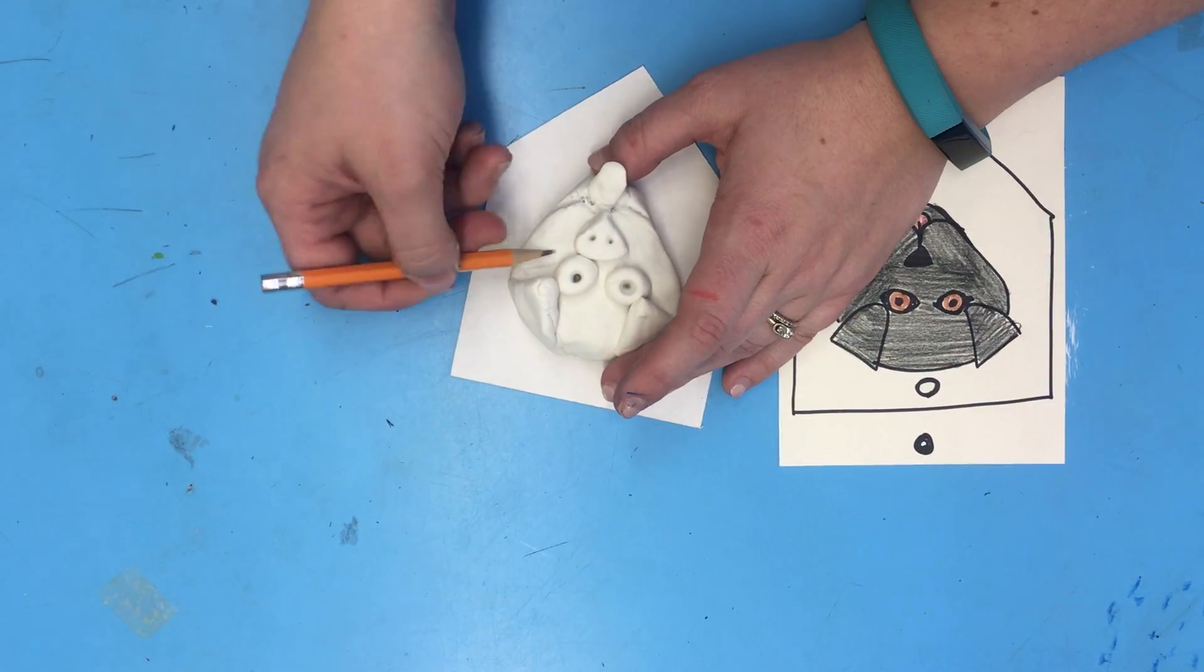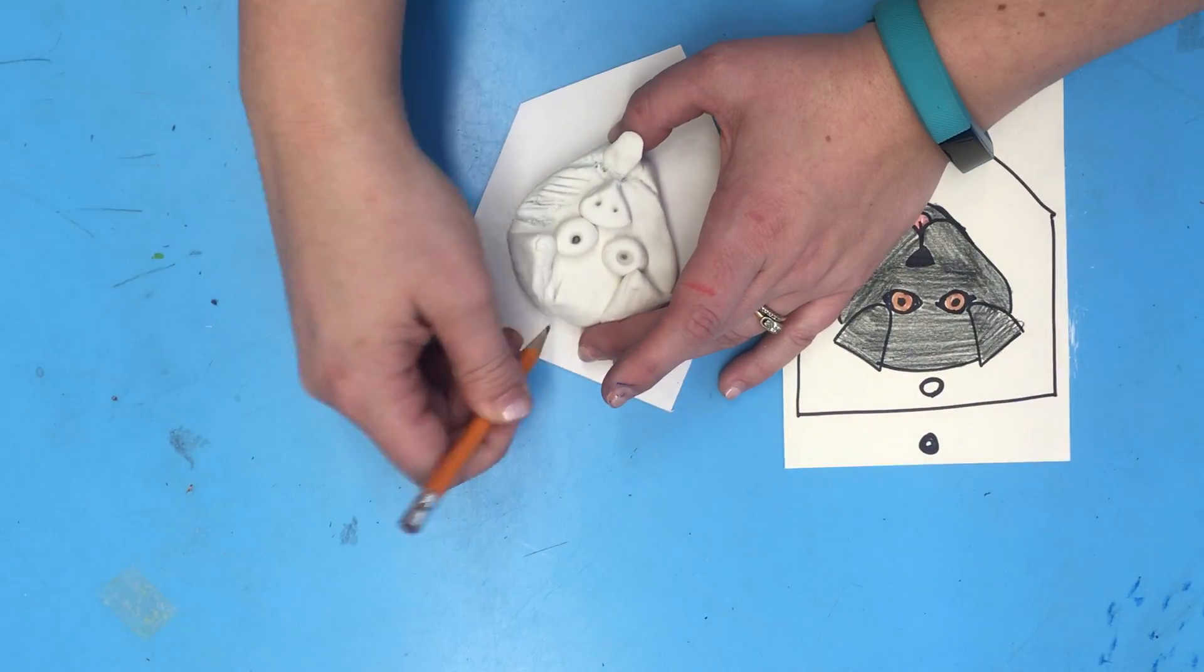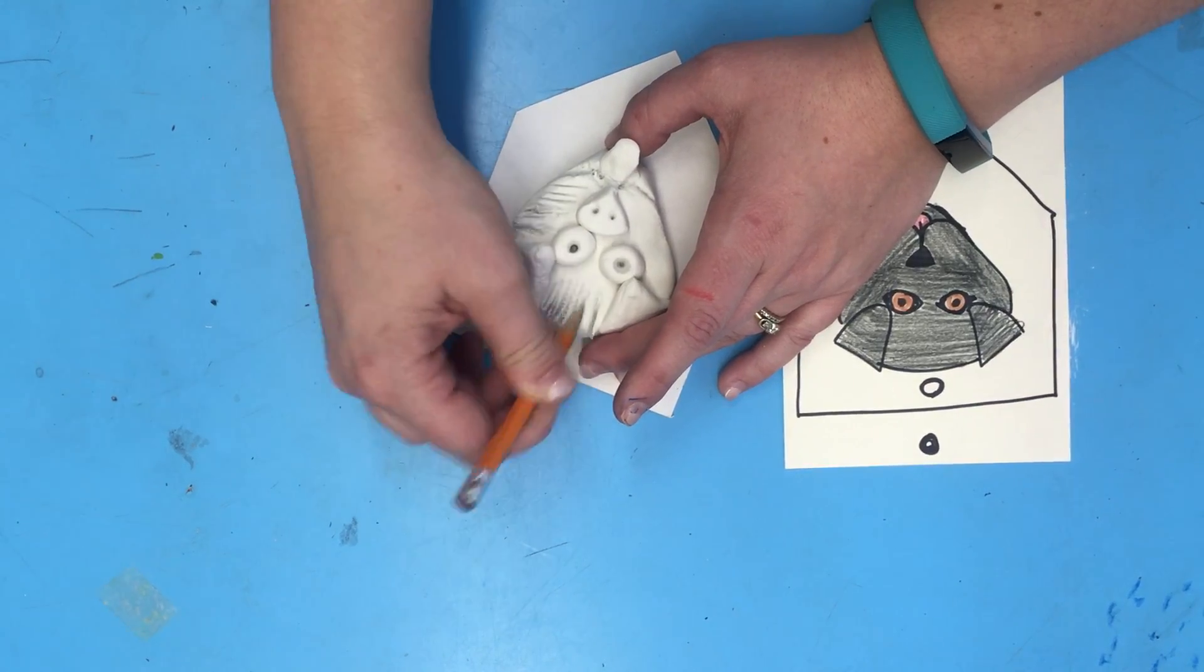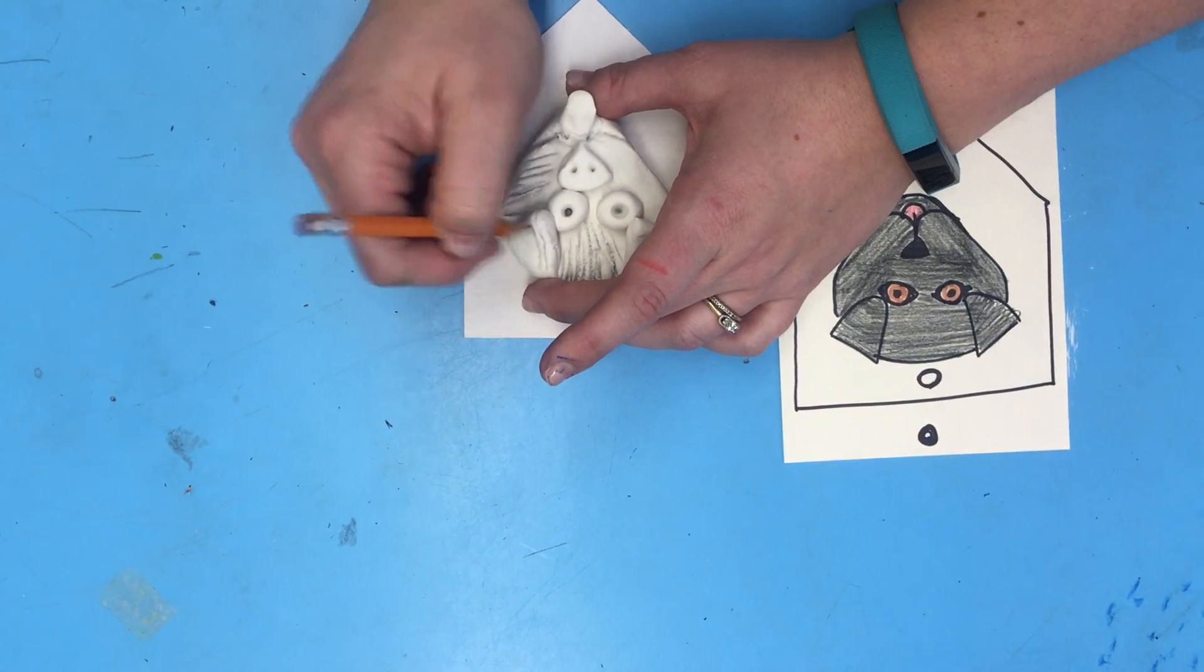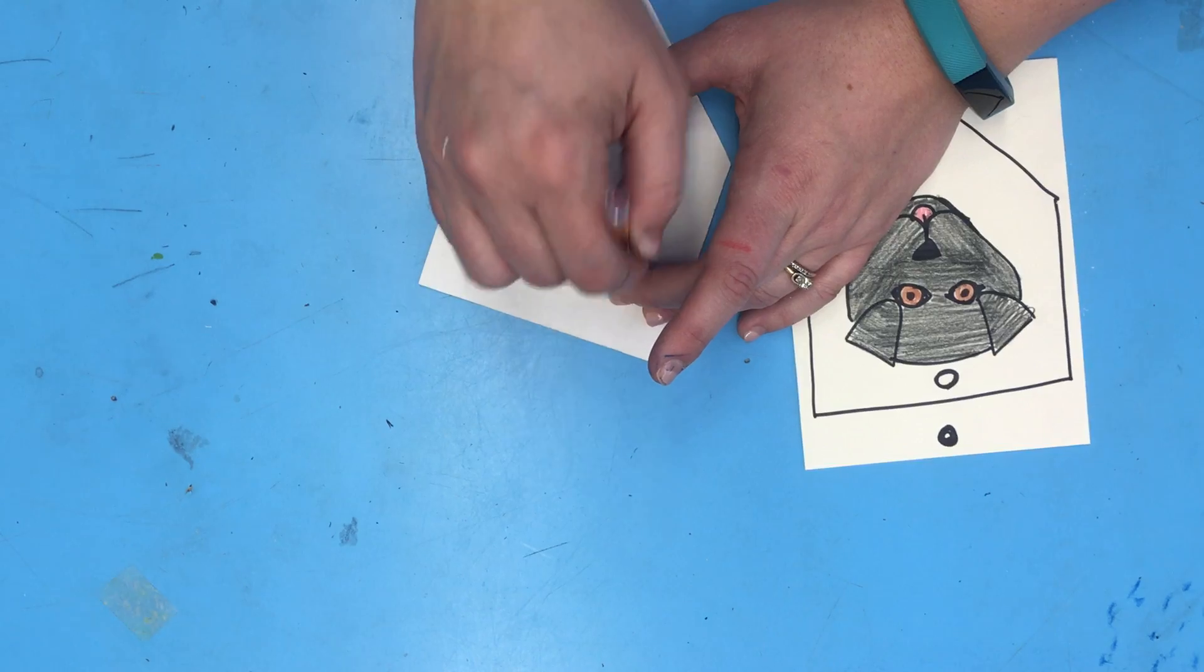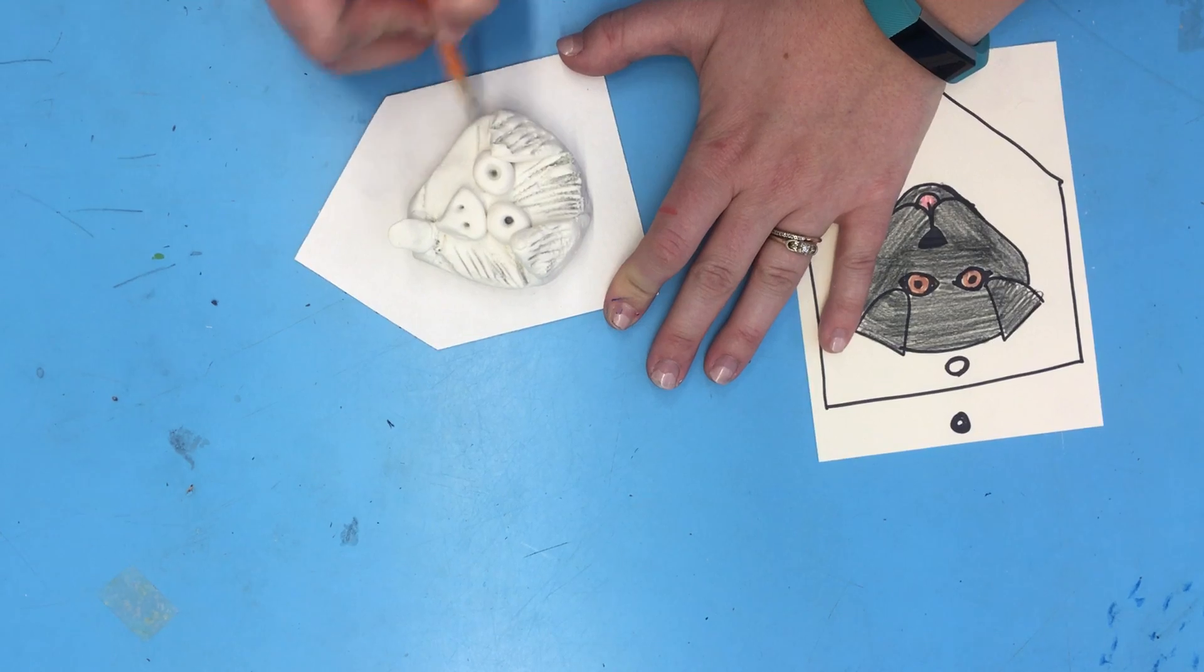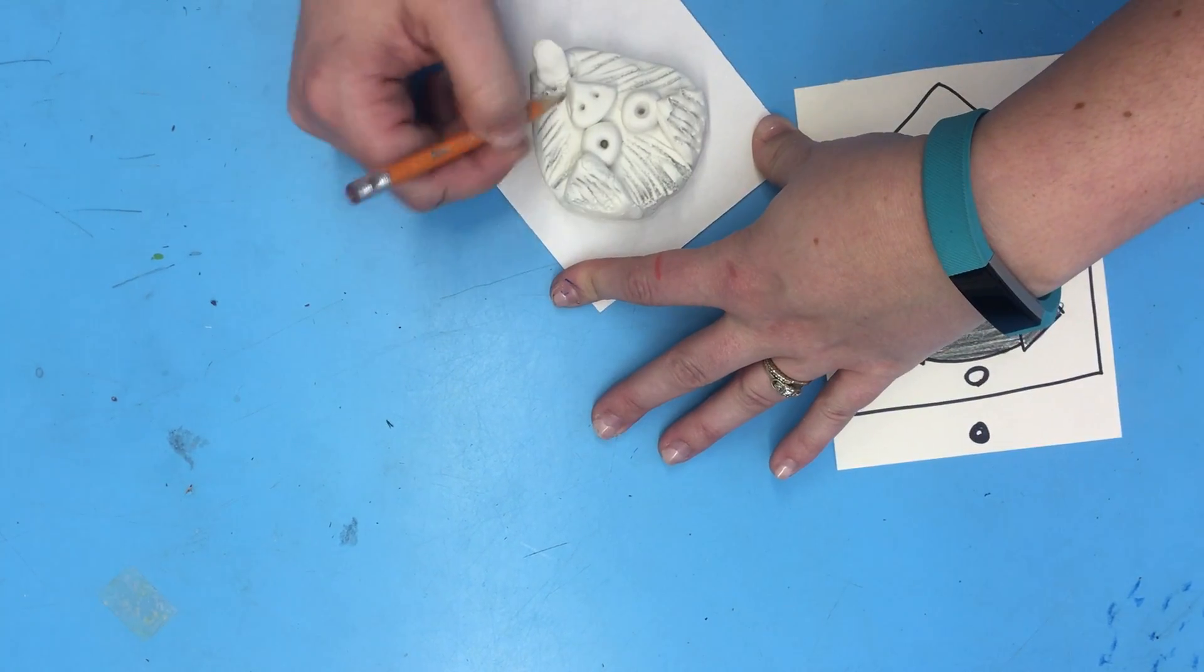And I might scratch the Model Magic to make it look a little bit furrier. And again, you don't need to worry about the pencil making marks because we're going to paint the whole thing black and do a little bit of an antiquing technique.